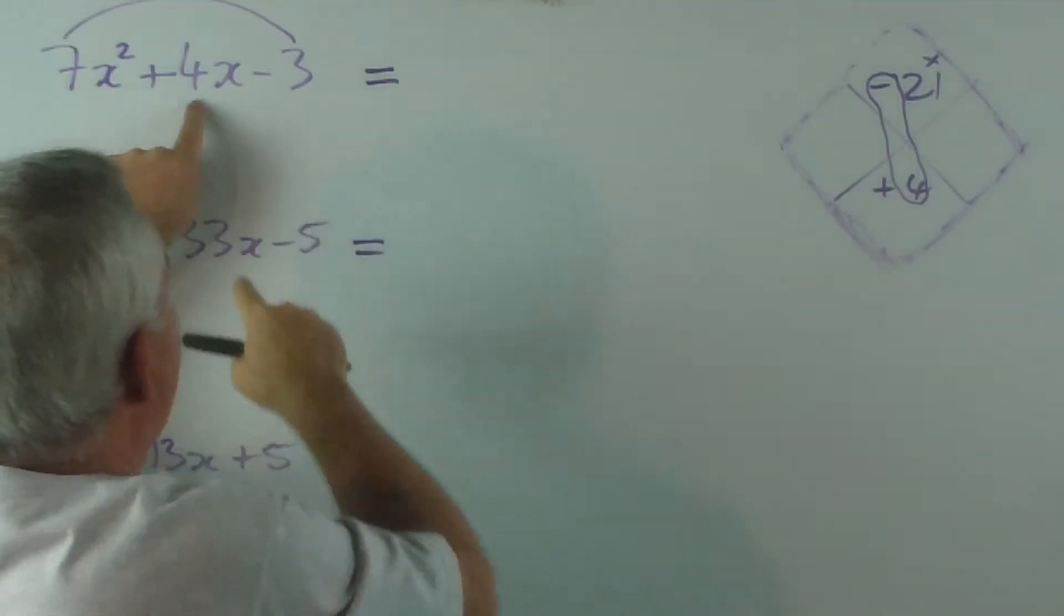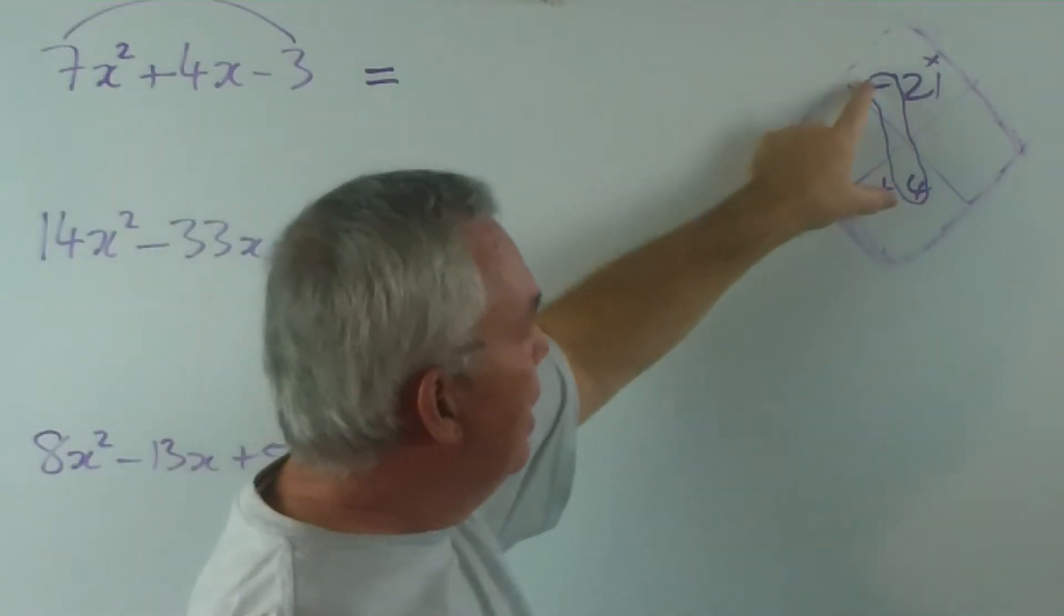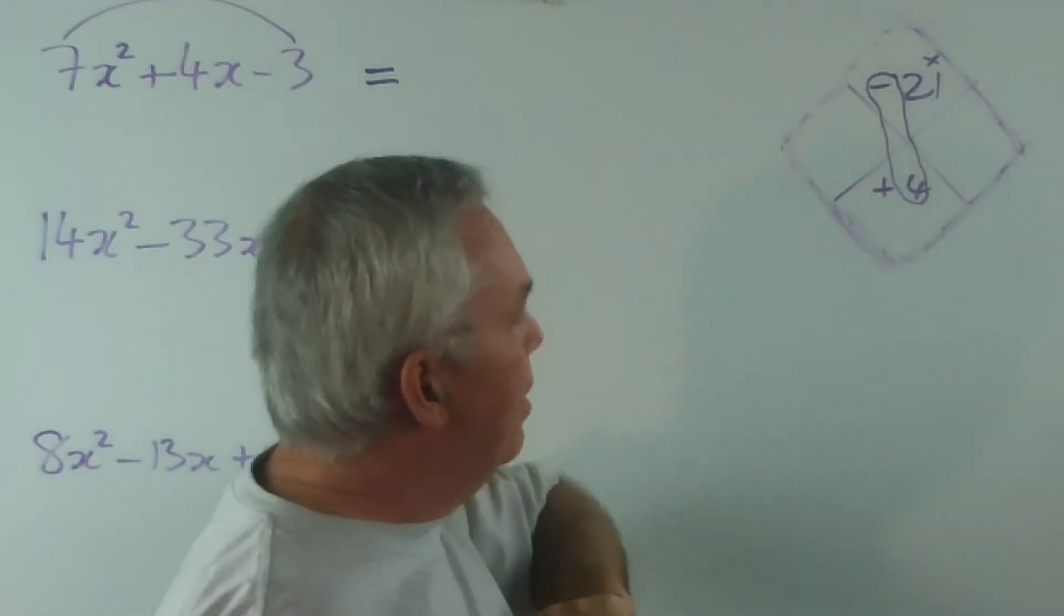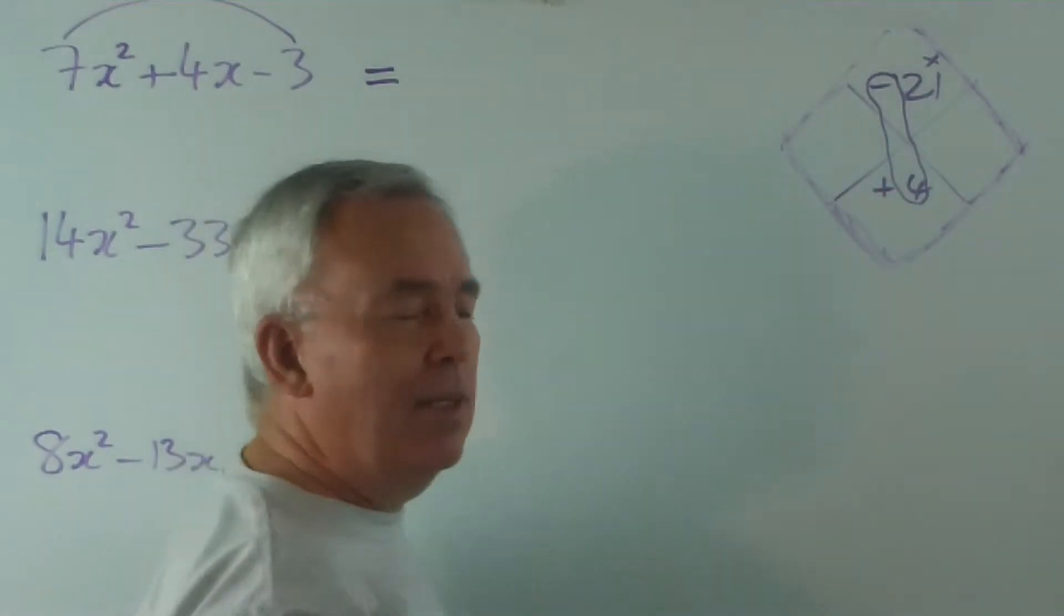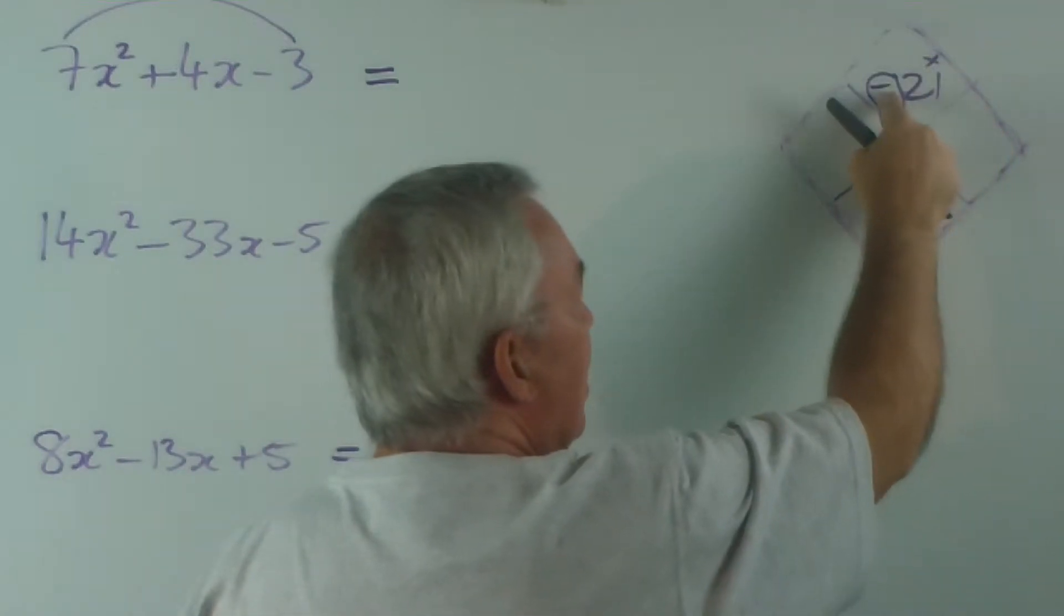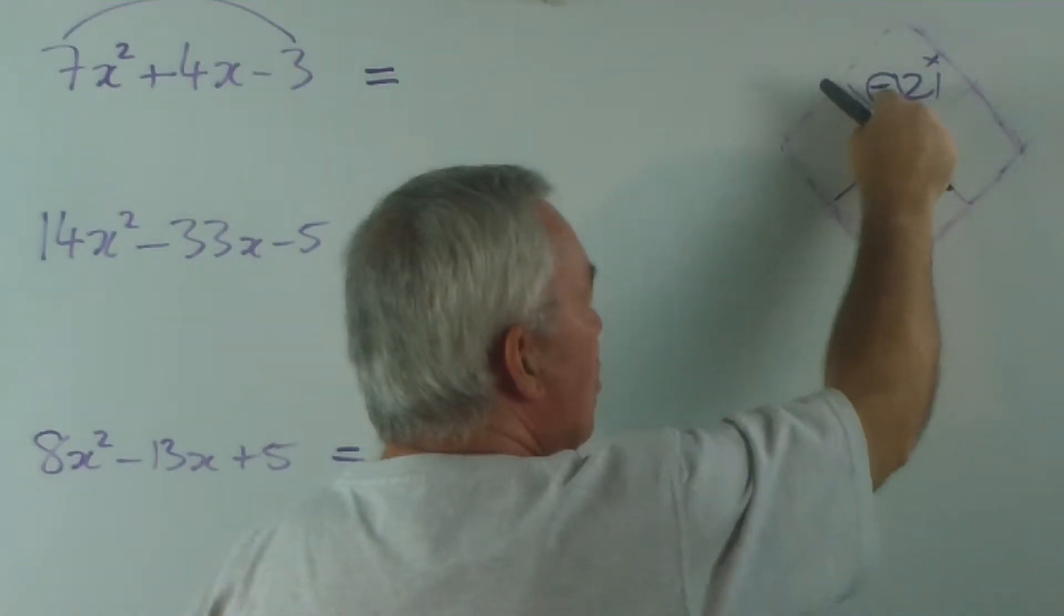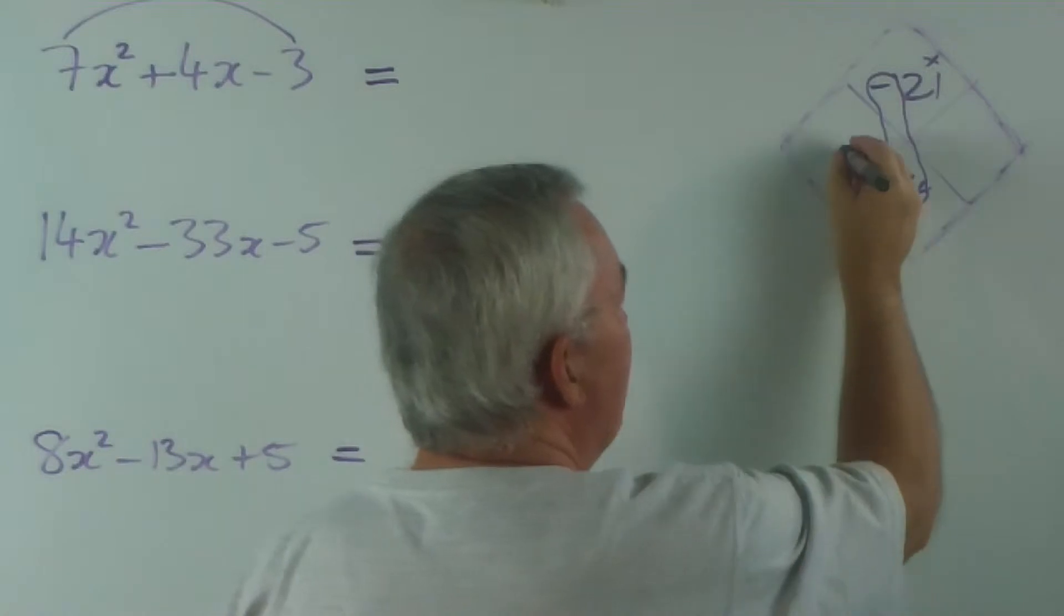These give us the product of roots, this gives us the sum. Let's have a close look at this. What numbers multiply to give 21, they're 4 apart, it has to be 7 and 3.